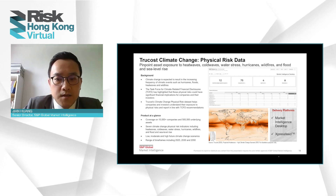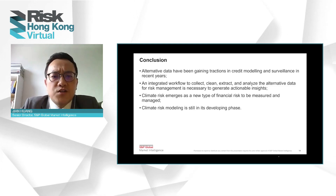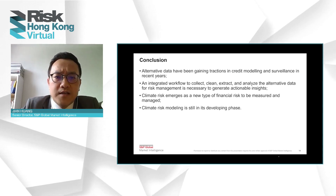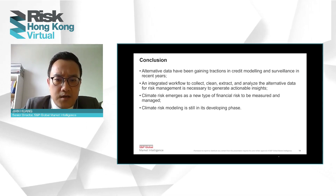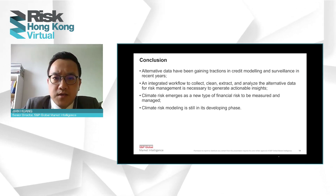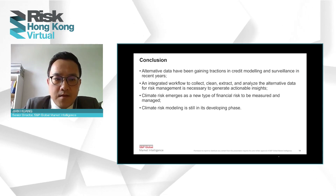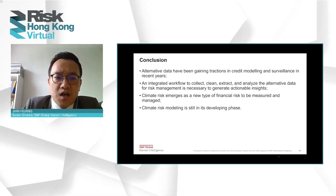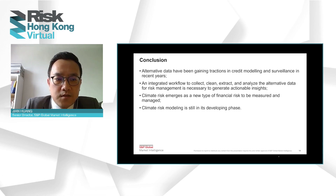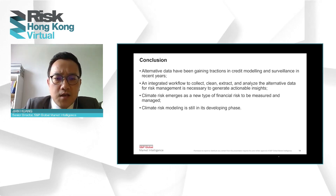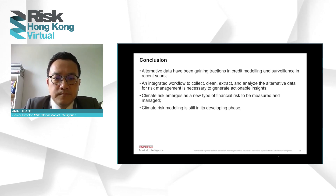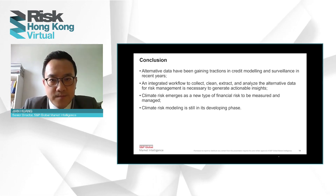In conclusion, alternative data has been gaining traction in credit modeling and surveillance in recent years. An integrated workflow to collect, clean, extract, link, and analyze alternative data for risk management is key to efficiently generating actionable insights for risk monitoring. Climate risk has emerged as a new type of financial risk which needs to be measured, monitored, and managed. Climate risk modeling is still in its infancy, and a lot of development is ongoing in the industry across the globe. That will be all for my presentation today. Thank you very much.